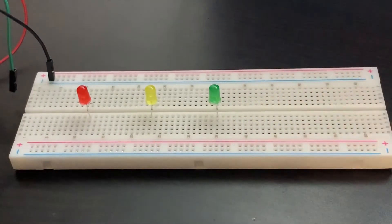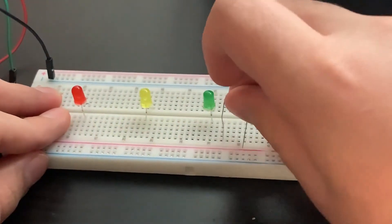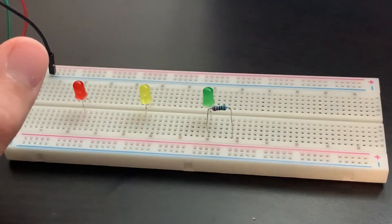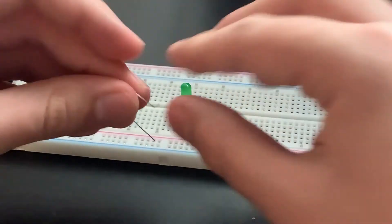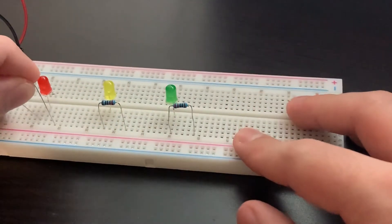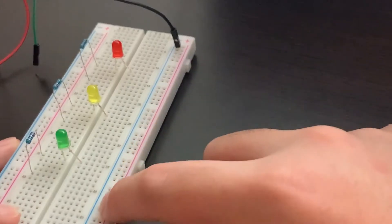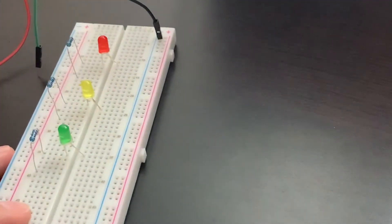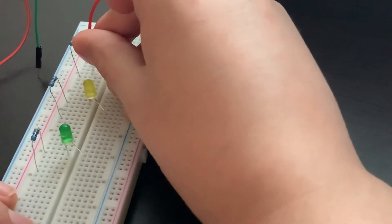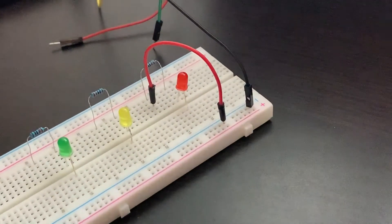Next we need to connect the resistors, the 220 ohm resistors. The first one is gonna go like this, the second one is gonna go like this, and the third one is gonna go like this. Now we can connect male-to-male jumper wires into these resistors. First we're gonna get red - one goes on the ground rail and one goes on the resistor. Next we'll do yellow, and lastly we'll do green.